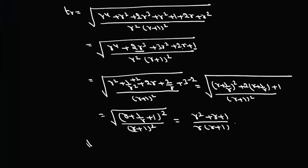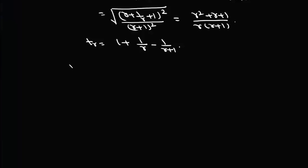We can now write t_r as 1 + 1/r − 1/(r+1). So we have simplified the general term as 1 + 1/r − 1/(r+1). Now we need to find the sum of the first 1999 terms.